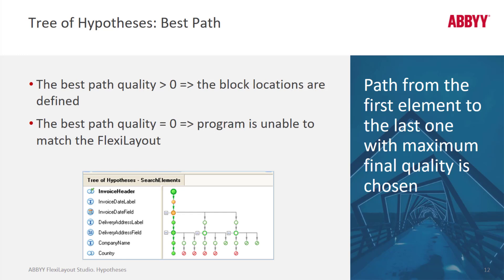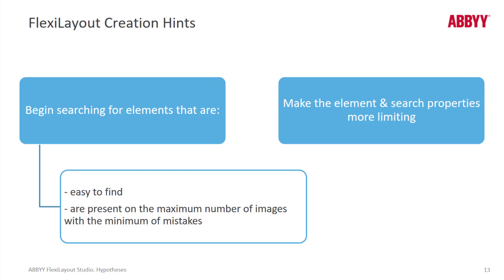When the program finds a chain of sub-element hypotheses with an ideal quality — a chain quality of 1 — it ignores all other sub-element hypotheses. A best practice when building a Flexi Layout is to begin searching for elements that are easily and reliably found. Then, for more challenging elements, make adjustments so that the search criteria is more limiting, and only the correct values are found. Making a restricted search area is a great approach, as well as using the nearest-to function. There are many other settings that can help Flexi Layout find just the right string, reducing or eliminating extraneous branches. Having only one branch is fastest.